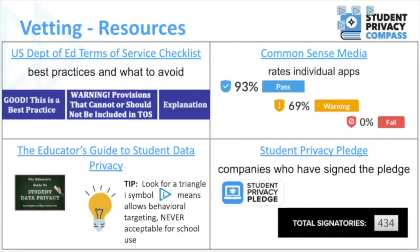Here are some useful vetting resources. The US Department of Education has a terms of service checklist showing what you want to see in a tool's policies and what to avoid. Common Sense Media evaluates the privacy policies of a large number of apps and services and rates them with a score — pass, warning, or fail. ConnectSafely and the Future of Privacy Forum created an educator's guide to student data privacy with helpful tips and questions. One tip is to look for the triangle eye symbol, which means the service allows behavioral targeting and is never acceptable for school use. Lastly, the Student Privacy Pledge by the Future of Privacy Forum is a set of commitments that companies have signed on to upholding, with currently 434 signatories.